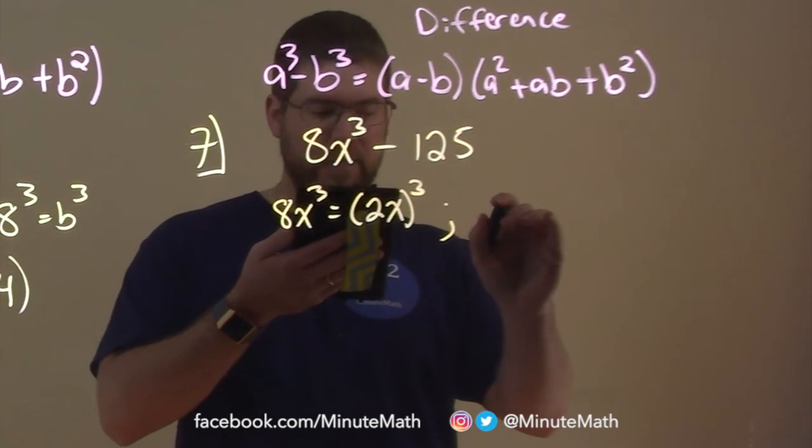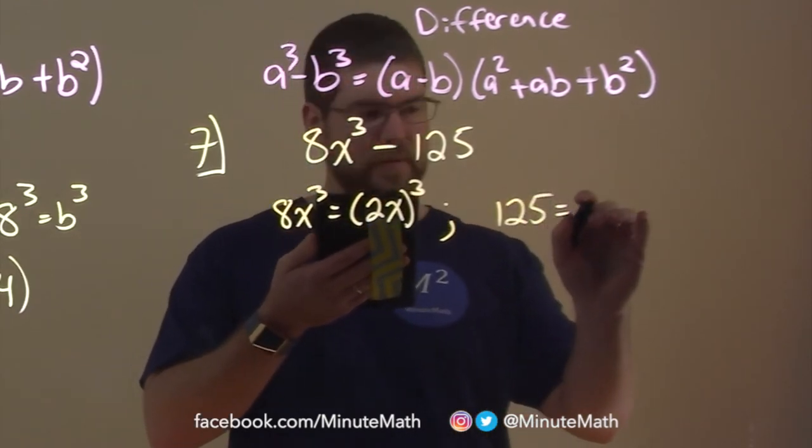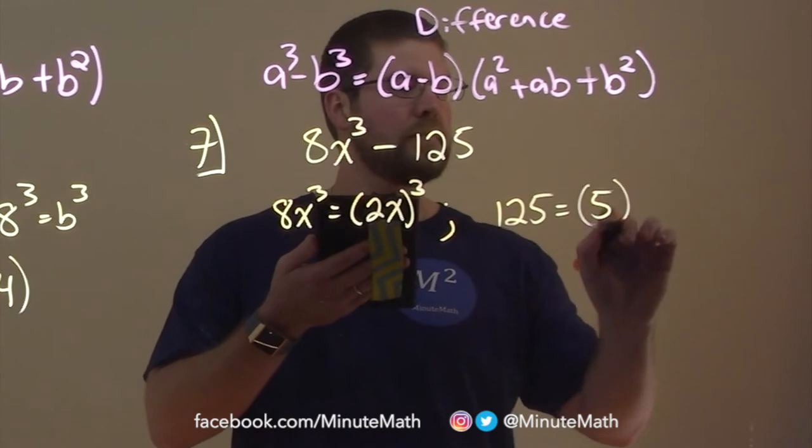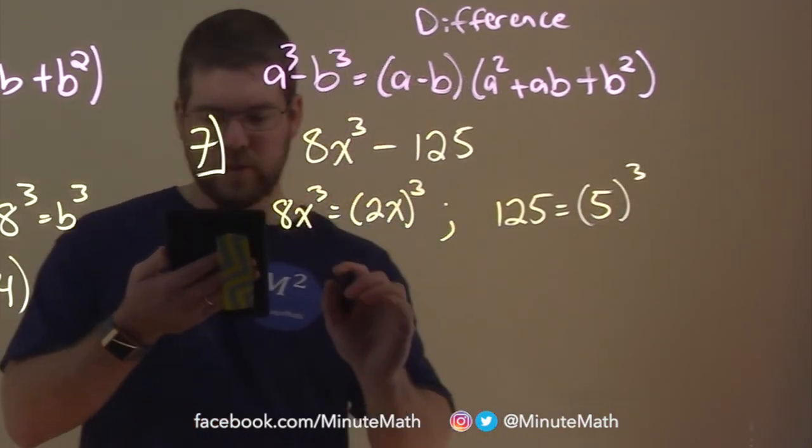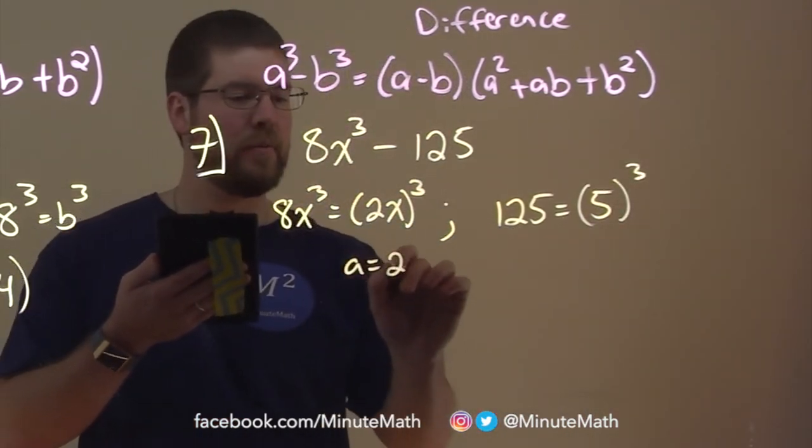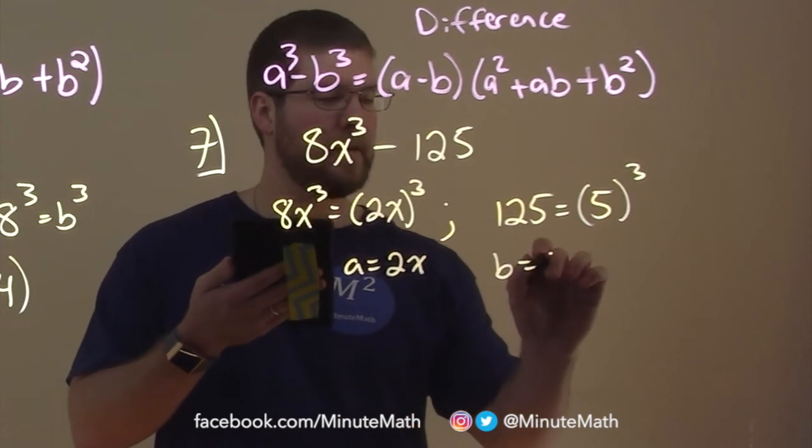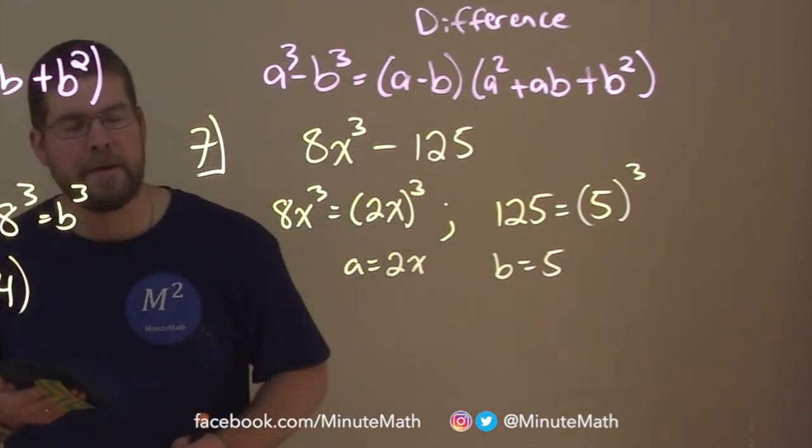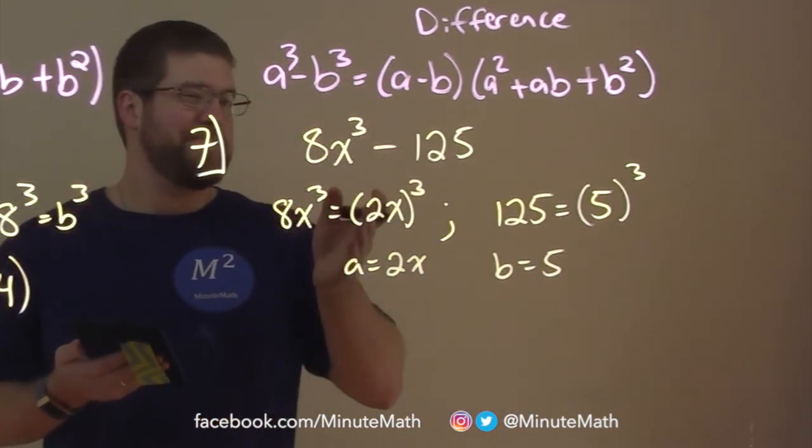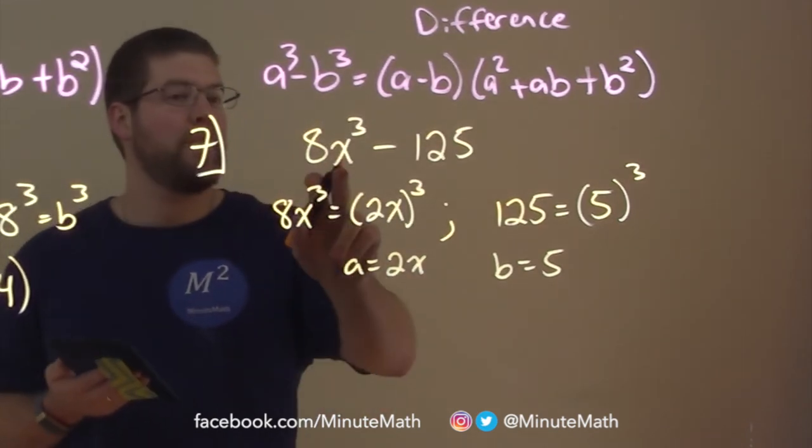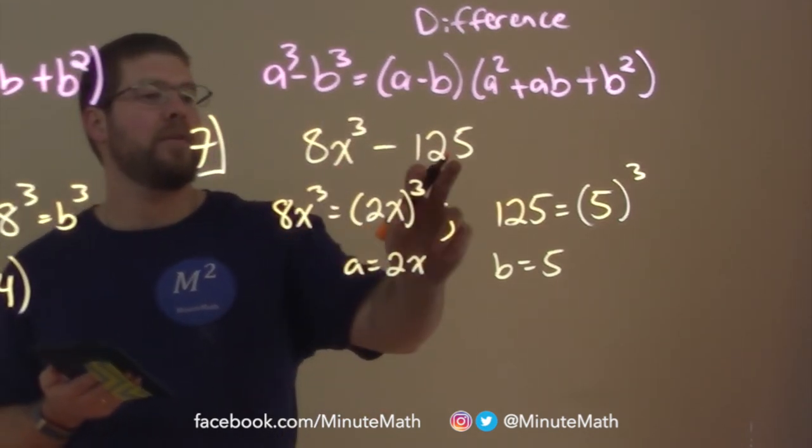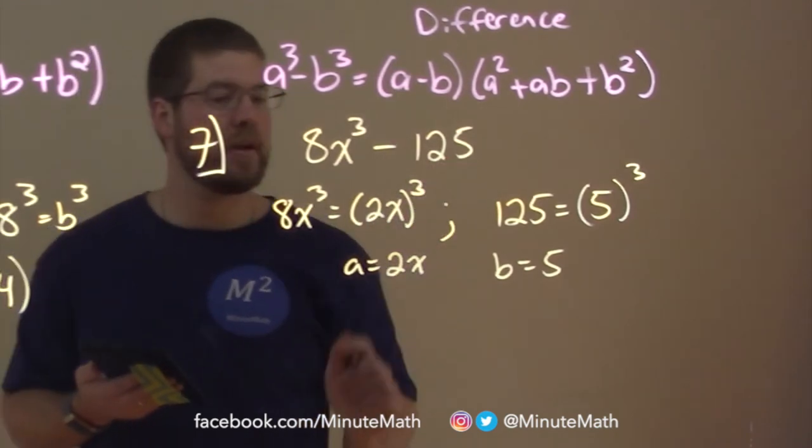So, 125 is equal to 5 to the third power. So, let's just rewrite here. Our a value is 2x and our b value here is 5. Okay? And so, now we just plug into our formula. We know it qualifies. We have the form, right? a to the third minus b to the third. So, we just plug in our formula.